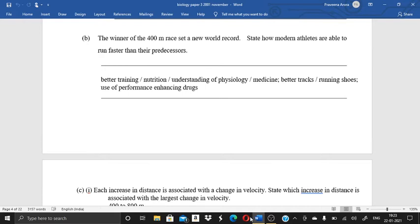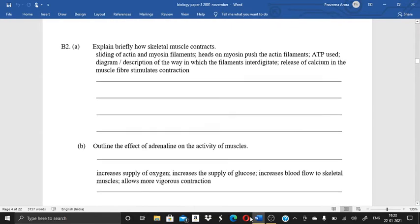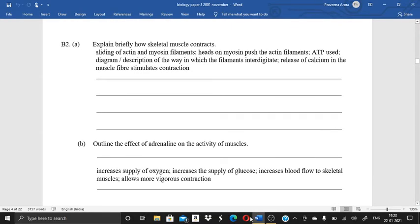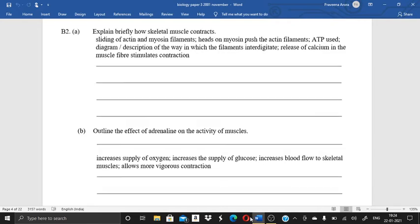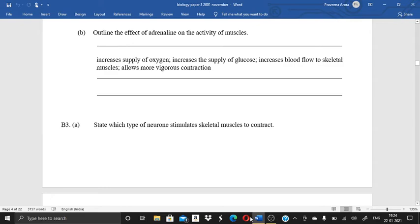Then we come to another question. Each increase in distance is associated with a change in velocity. State which increase in distance is associated with the largest change in velocity. Next question suggests reasons for this increase in distance having a greater effect on mean velocity than the other increases. Then we come on the B part, I am sorry, B question. Explain briefly how skeletal muscle contracts. So I have given you the answer over here. You can just check it out. And if something is not clear, you can just write down us in the comment box. Definitely I will revert you back.